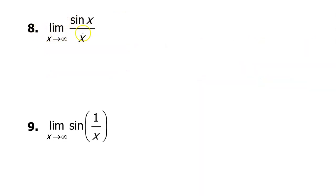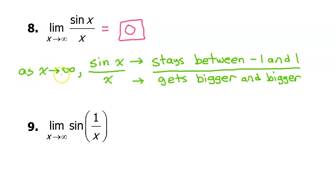There's no work to show for number eight either. You should be able to look at this and realize that the limit is zero. As x approaches infinity, sine x stays between negative one and positive one, but meanwhile the denominator x just gets bigger and bigger. Because the numerator stays small as the denominator gets bigger and bigger, the overall value of the fraction is approaching zero.